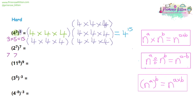So for the next question, we have two to the power of seven all to the power of seven. Seven times seven gives us 49, so our answer will be two to the power of 49. The next one: 11 to the power of eight all to the power of nine. We take eight and multiply it by nine, giving us 72, so our overall answer is 11 to the power of 72.